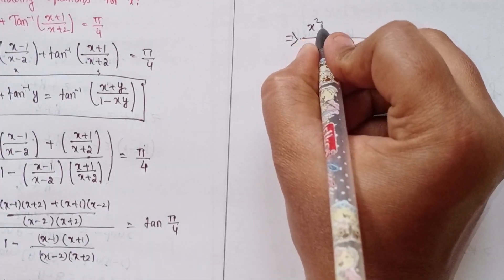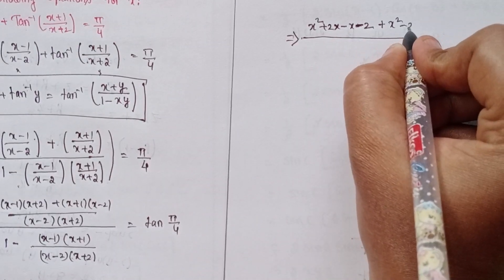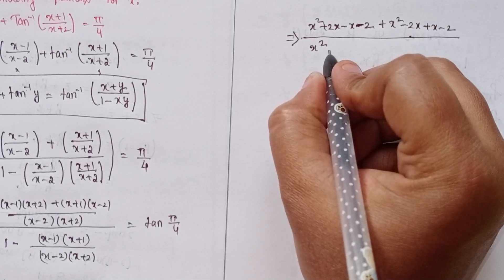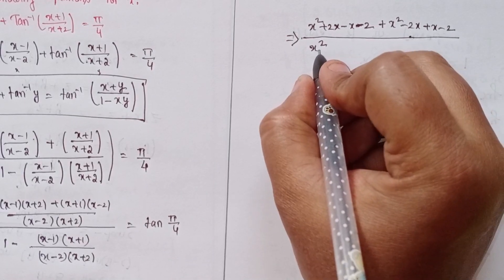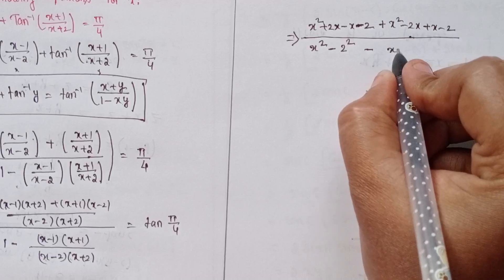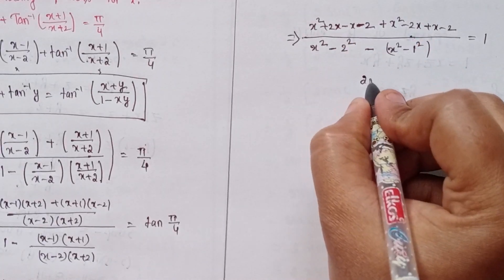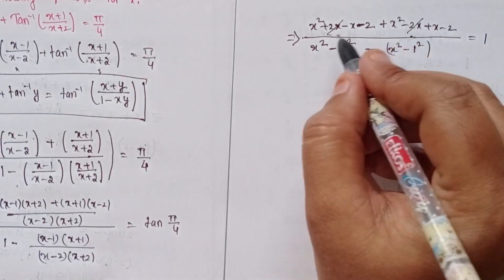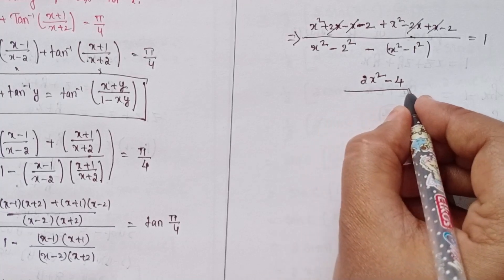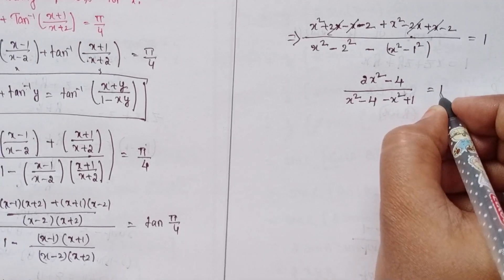Expanding the numerator: x² + 2x − x − 2 + x² − 2x + x − 2, which simplifies as the ±2x terms cancel and ±x terms cancel giving 2x² − 4. The denominator uses the identity (a+b)(a−b) = a²−b²: x²−4 minus x²−1, giving x²−4 − x²+1 = −3. So we have (2x²−4)/(−3) = 1.